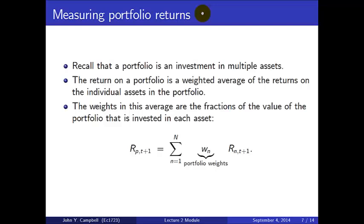Now let's relate this to portfolios and how we measure portfolio returns. A portfolio is an investment in multiple assets. The return on a portfolio is a weighted average of the returns on the individual assets, where the weights are the fractions of portfolio value invested in each asset. The formula is: portfolio return R_{P,t+1} = sum over n assets of portfolio weights (which must add to 1) times the individual asset returns. That completes our first topic of measuring return.